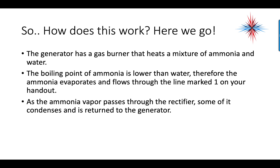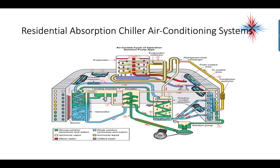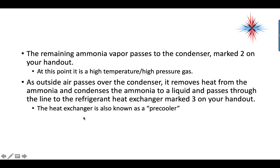As the ammonia vapor passes through the rectifier, some of it condenses and is returned to the generator. The remaining ammonia vapor passes to the condenser marked two. At this point, it's a high-temperature, high-pressure gas — which sounds familiar. As the outside air passes over the condenser, it removes heat from the ammonia and condenses it to a liquid.